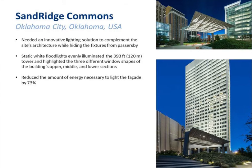At Sand Ridge Commons in Oklahoma City, Oklahoma, the goal was to highlight different window shapes and perspectives in the building. There wasn't much need to make it a dynamic color-changing spectacle — they simply wanted to highlight the interesting architecture. Using static white flood lights, they were able to evenly illuminate 393 feet — almost 120 meters — of the tower and highlight those different window shapes. Because they used LED white light, they reduced energy consumption by 73%.